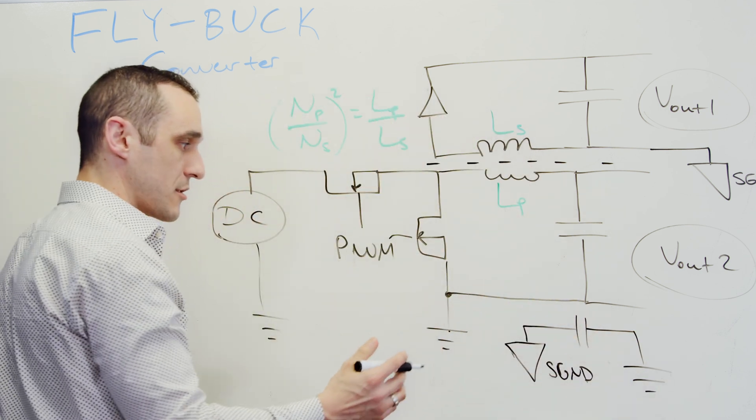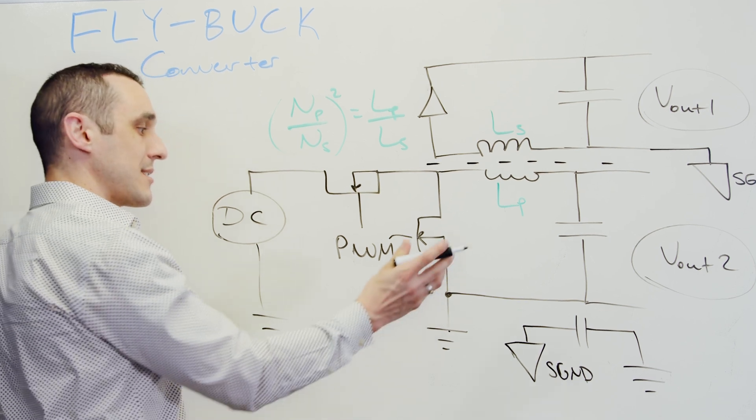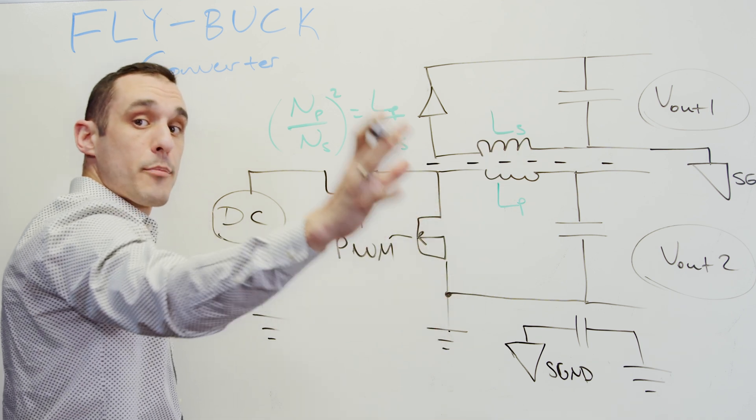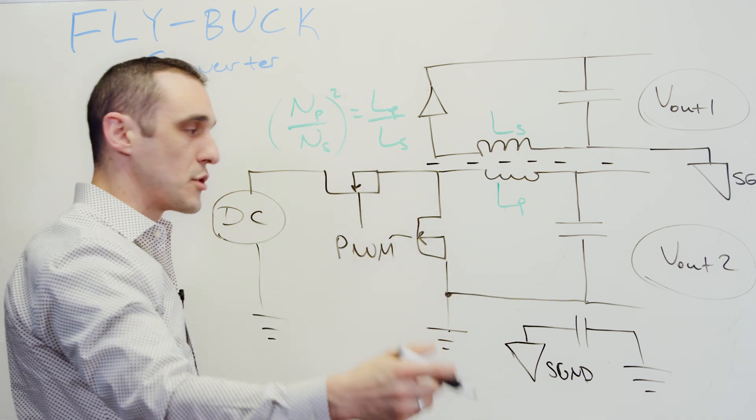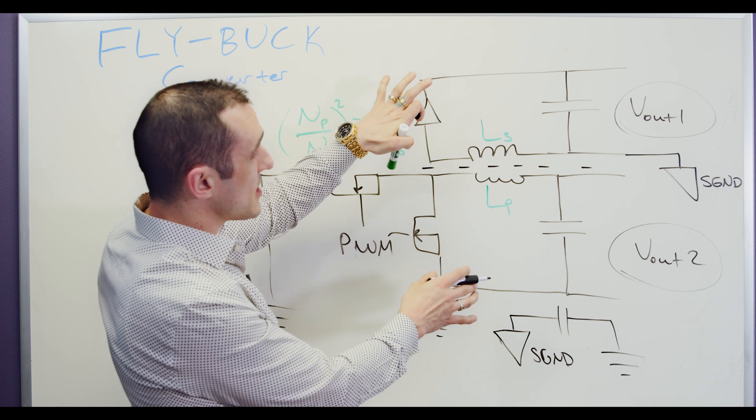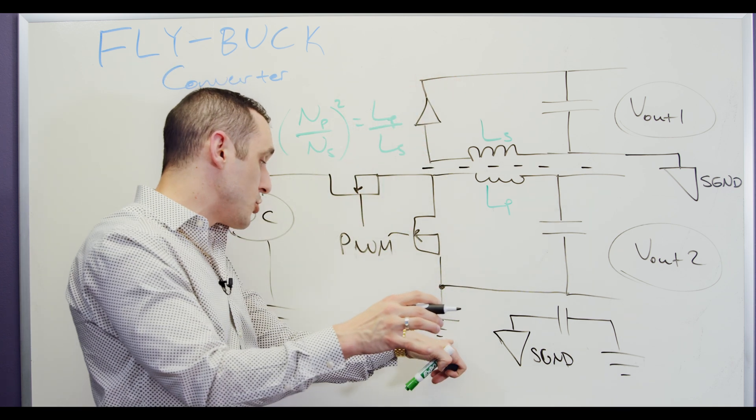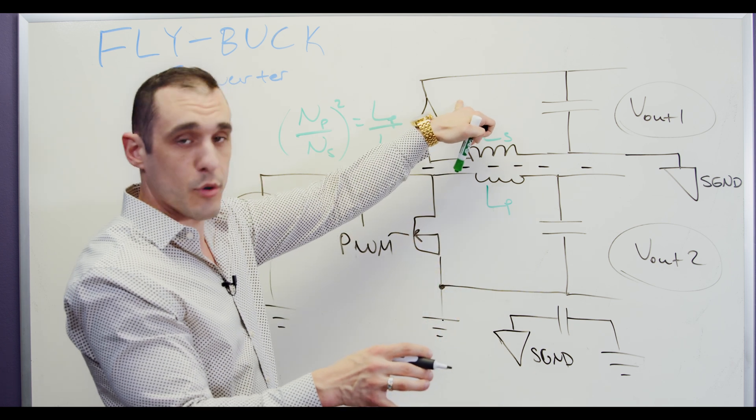You want to then check, of course, the leakage on this capacitor to make sure that you don't have excessive current traveling through the secondary side over to some output where a person might interact with it because there are EMC regulations that limit that.